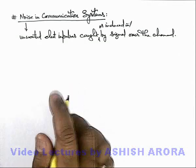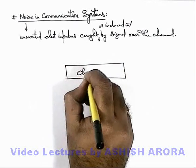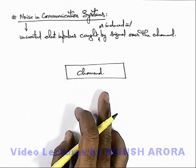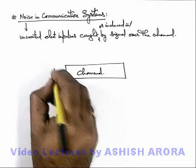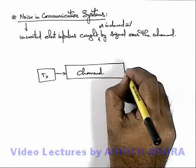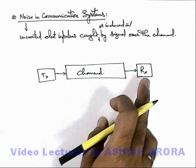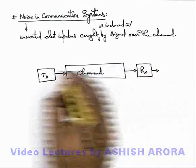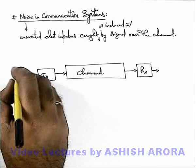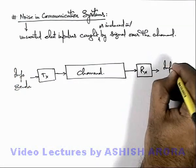A communication channel is a media through which information is communicated over long distances from one place to another. Information is transmitted by the transmitter to the channel and finally received by the receiver. In the transmitter and receiver there are transducers which convert the signal into the required formats. This is the information sender and this is the final information receiver.